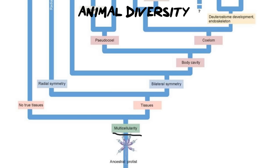That multicellular common ancestor is probably something like a protist, and from there outwards we have all of the animal groups we see today. What's important to understand about phylogenetic trees is that they show us common ancestors, and common ancestors are often located at these points of divergence. Essentially, what you're doing is looking for how many common ancestors animals have in common — the more common ancestors they share, the closer they are in relation to one another.